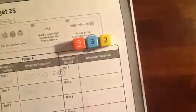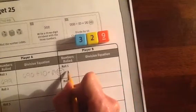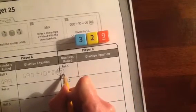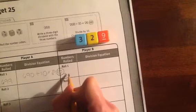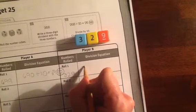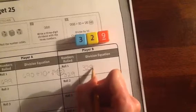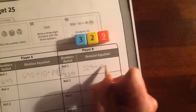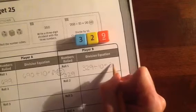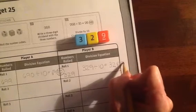Hopefully your students will learn a little bit of strategy. The number cubes that I rolled were 3, 2, and 9. So I'm going to do 329 divided by 10, and that's going to be 32 remainder 9.